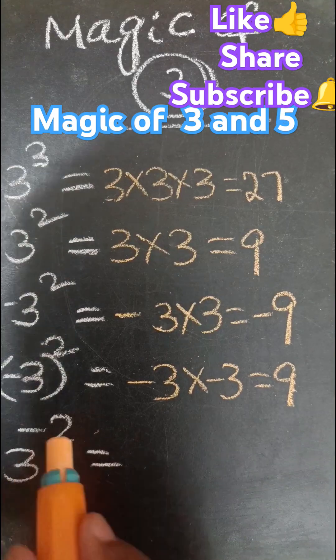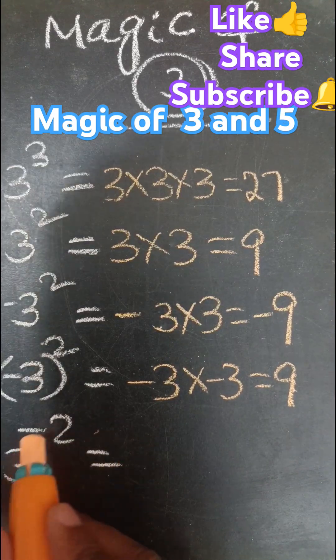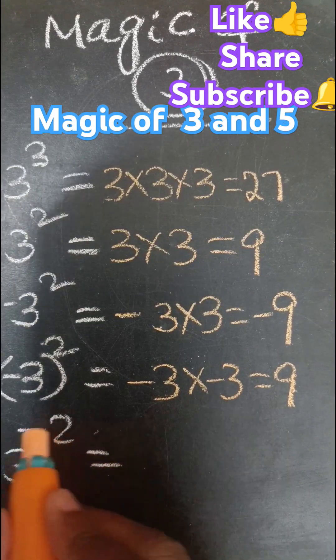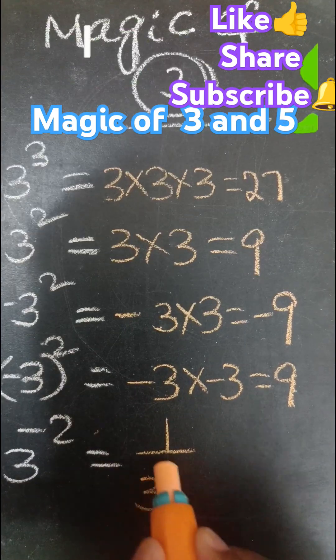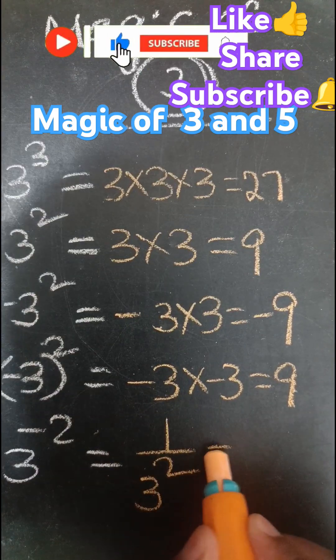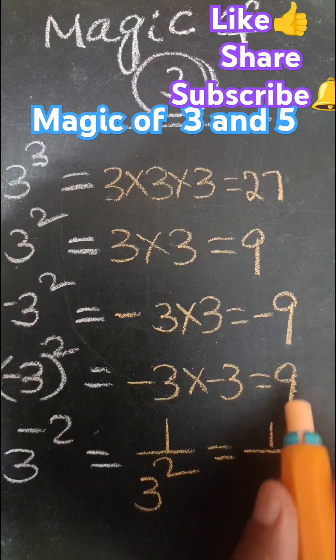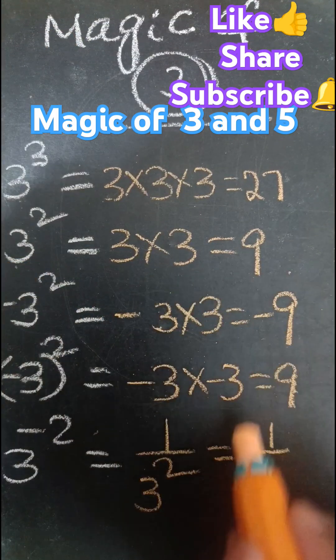Minus 3 power minus 2. So 3 power minus 2. So at the minus, write 1 by 3 square, is equal to 1 by 3 square means 9.